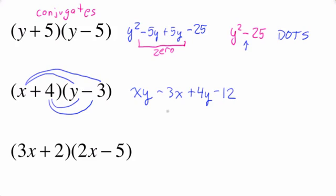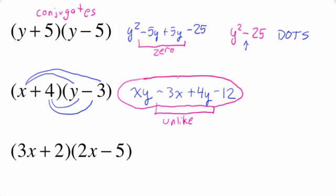Now, in a lot of the other examples, these were like terms. But in this example, these are unlike terms. So this is our final answer. We cannot simplify it to a trinomial.